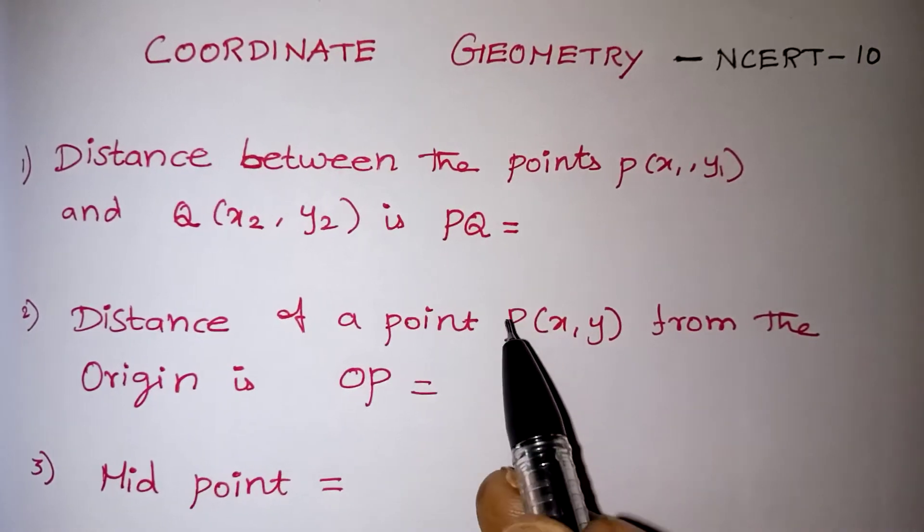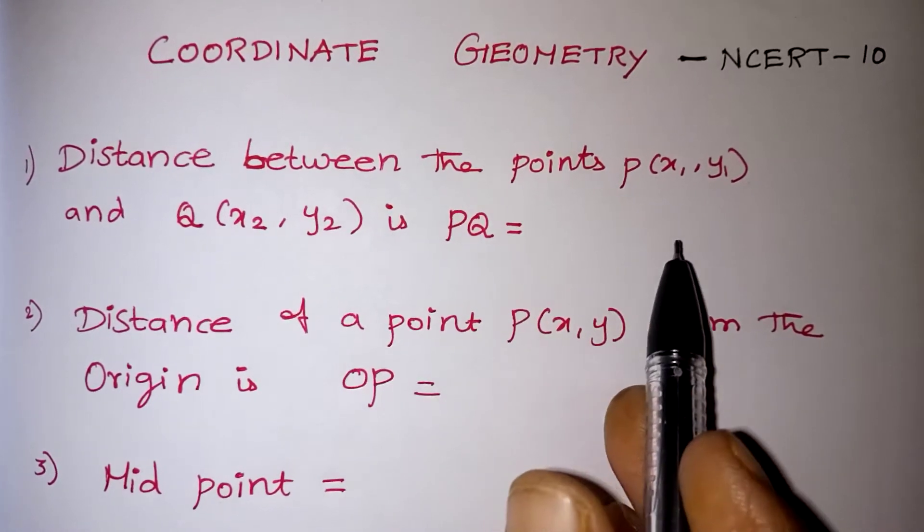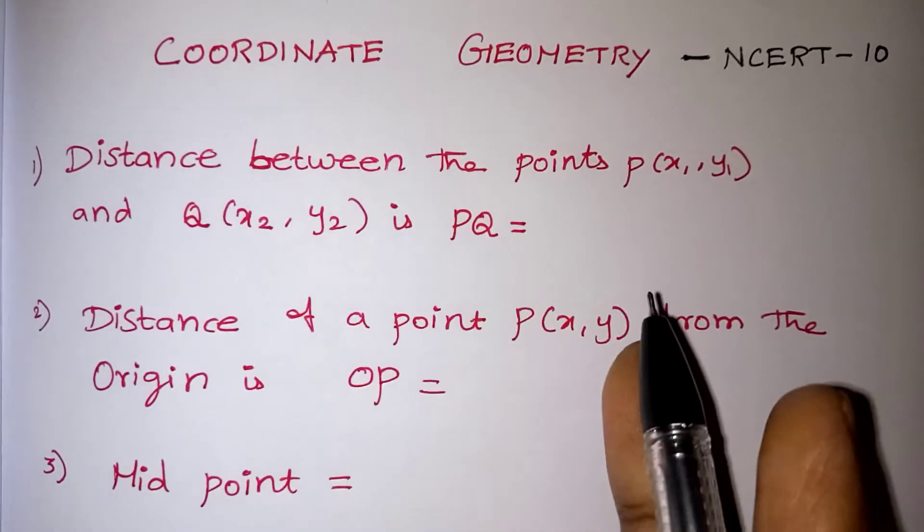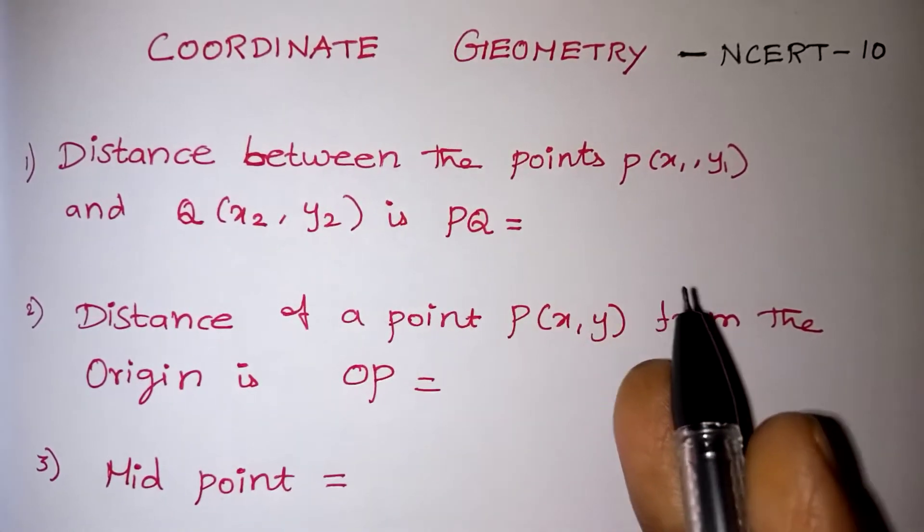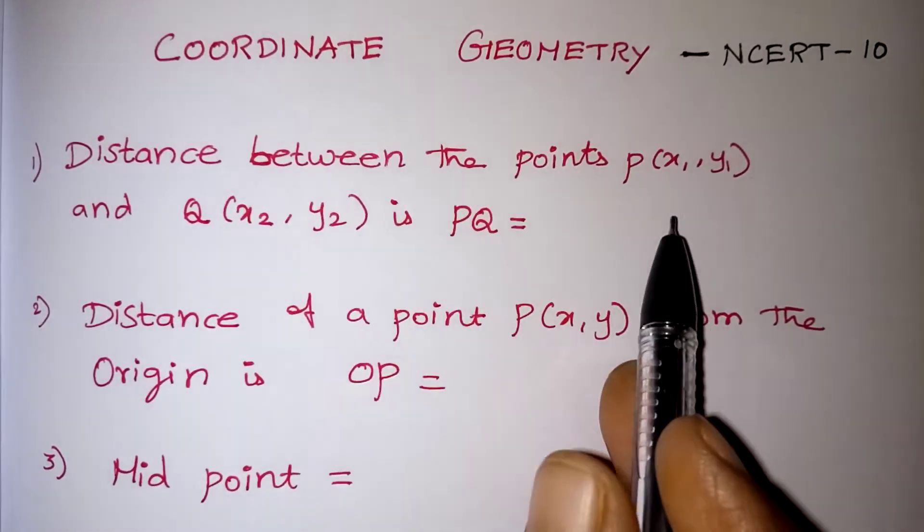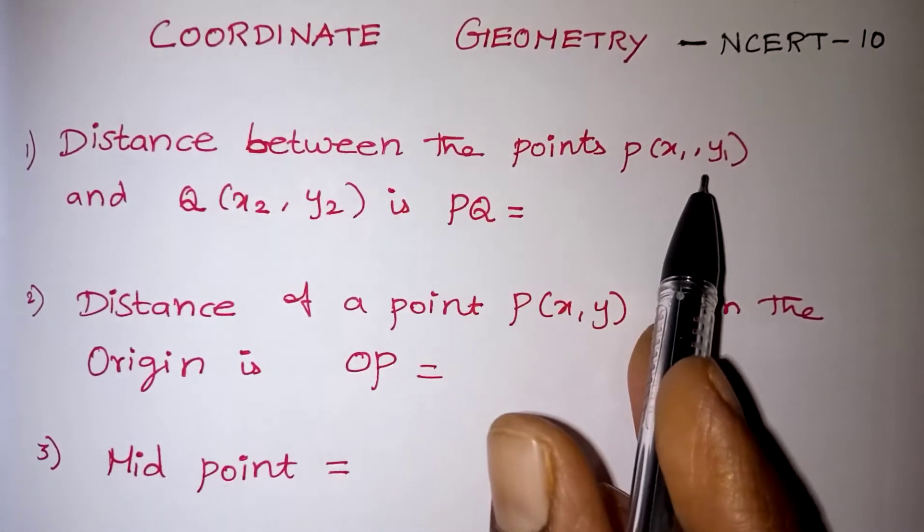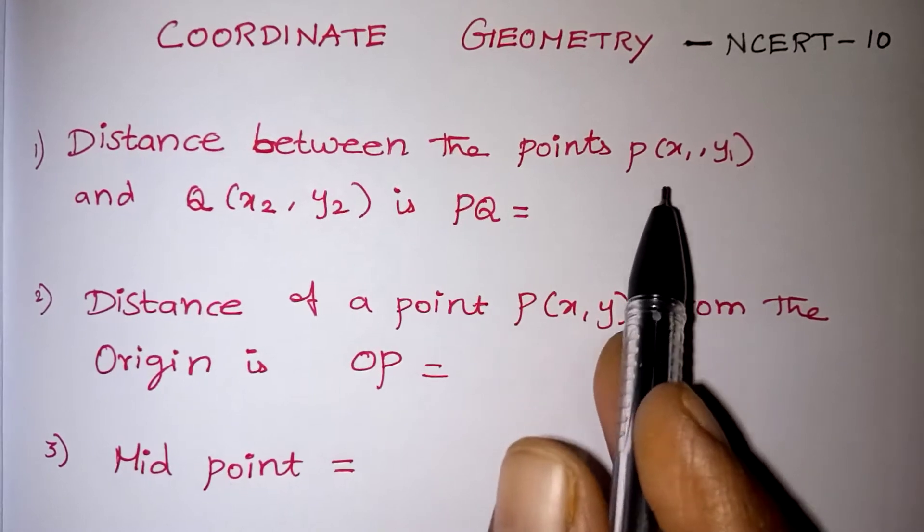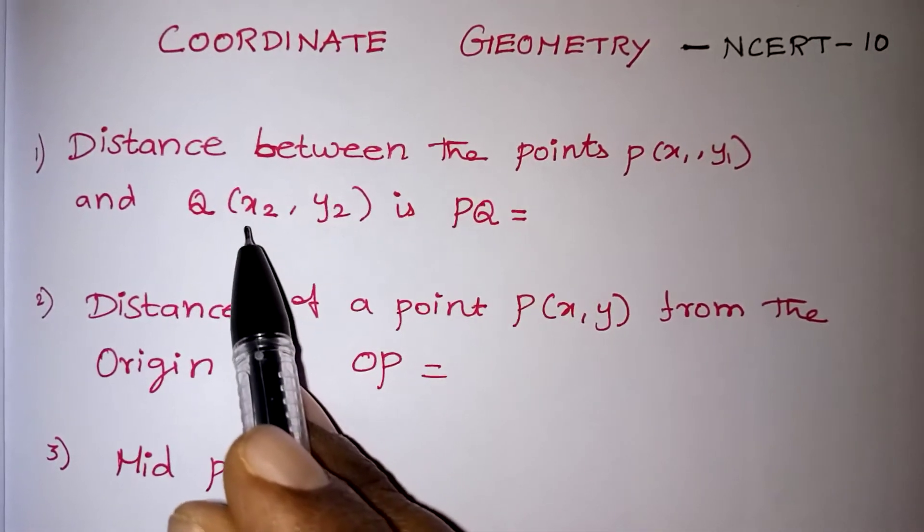First formula, distance between the points x1, y1, x2, y2. Two points will be given to you, for example 2,3 and 5,6, find the distance. Two points are given means first point should be taken as x1, y1. First number is x1, second number is y1. In the second point, first number is x2, second number is y2.